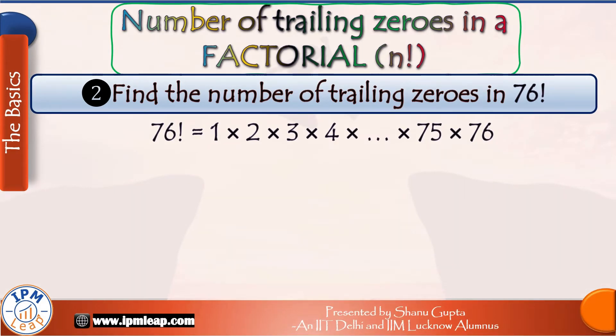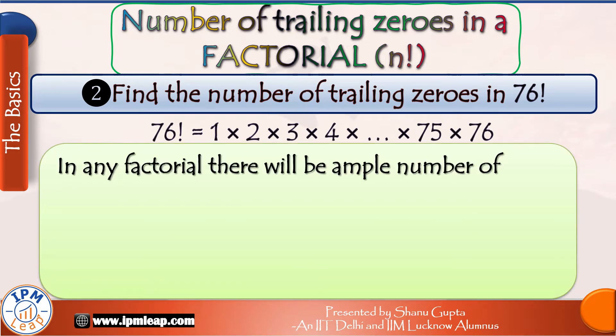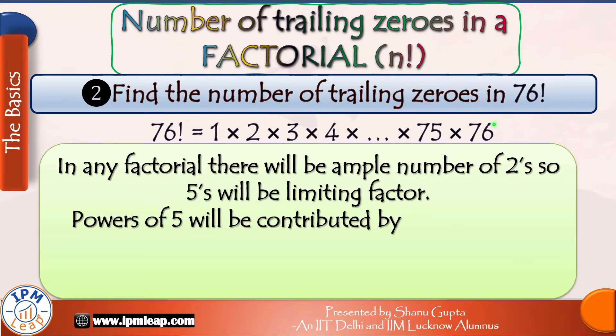Next, we need to find out the number of trailing zeros in 76 factorial. No matter which factorial is given to you, the procedure for finding the trailing zeros is the same in each case. So pay attention. We already know that 76 factorial is nothing but the product of first 76 natural numbers.